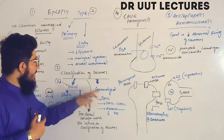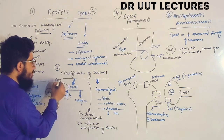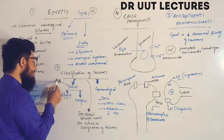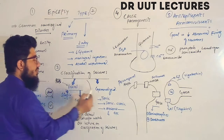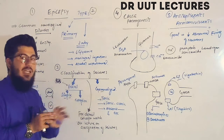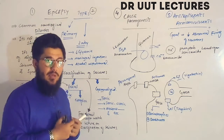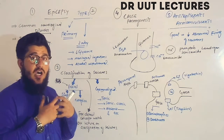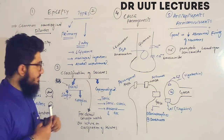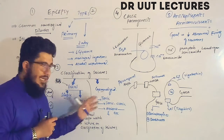A generalized seizure occurs when a focal seizure aggravates and spreads to cover the complete hemisphere — or even both hemispheres, meaning the entire brain shows abnormal electrical discharge. Examples of generalized seizures include tonic, tonic-clonic, and absence seizures.